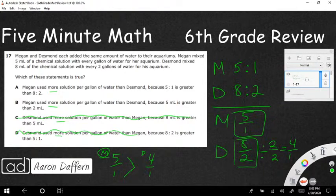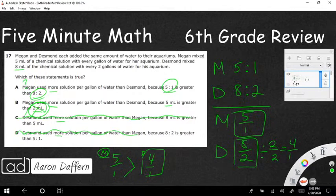Now let's look at our two answers for A, because they both say that Megan used more, but only one of them is going to be correct. A says Megan used more solution per gallon of water than Desmond, because 5 to 1 is greater than 8 to 2. You notice that they did not show you the simplified version. That's what you have to do as a sixth grader. B says Megan used more because 5 milliliters is greater than 2 milliliters. Well, 5 milliliters is greater than 2 milliliters, but this has nothing to do with anything. 2 milliliters is not in the problem. So once we get past all of that, we reduce our 8 to 2 to 4 to 1, now we can compare, and our answer is going to be A.